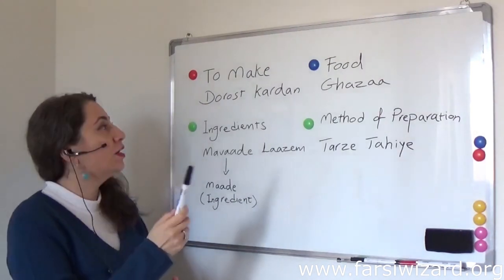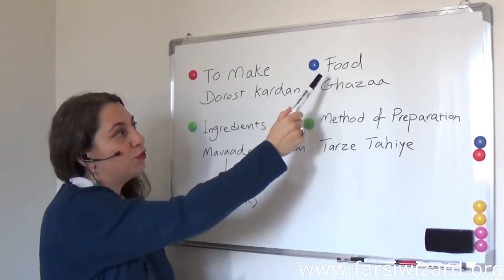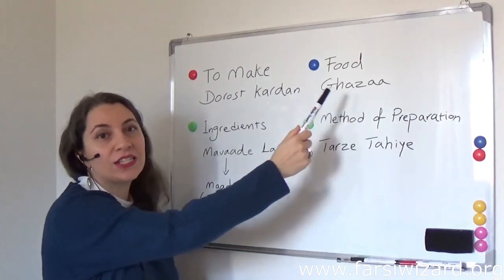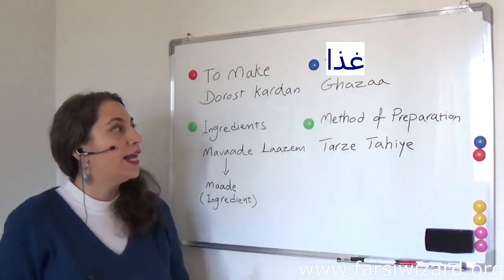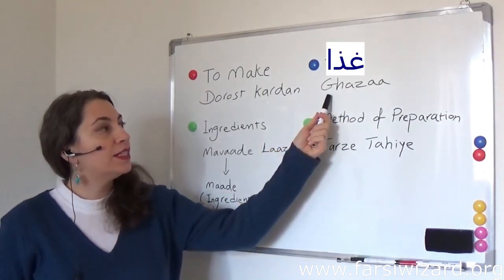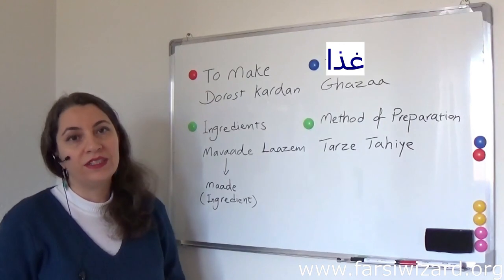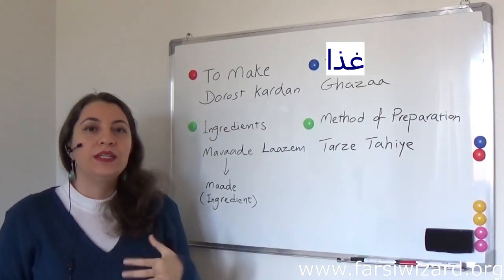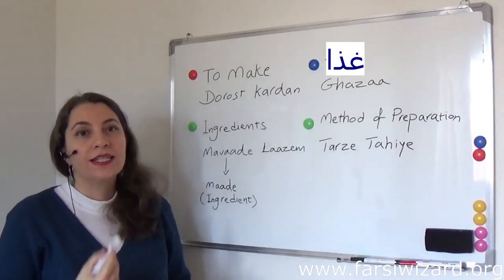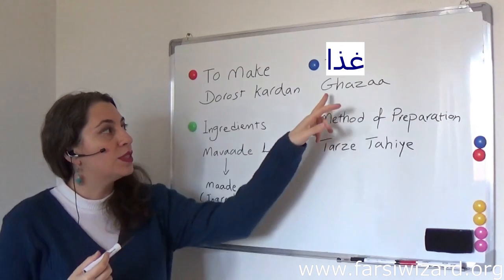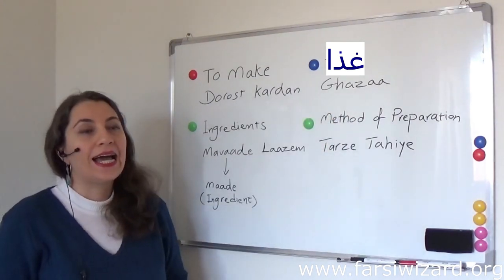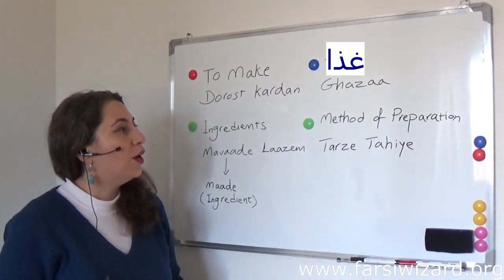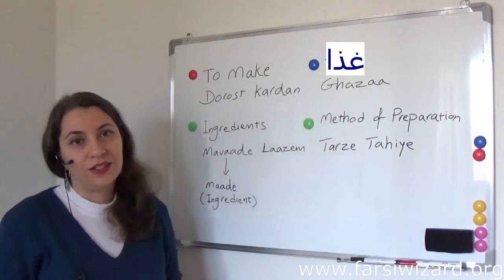Let's start with the word 'food.' Food in Farsi is 'qaza.' The first letter here might be a little bit difficult to get, but imagine you're gargling some water — that's how you produce this sound. So, food is 'qaza.'